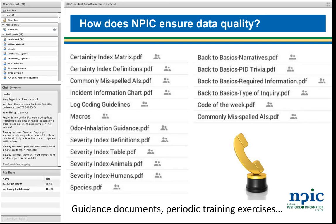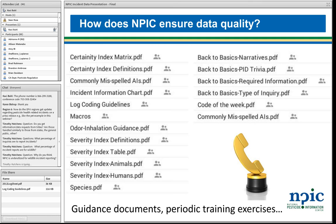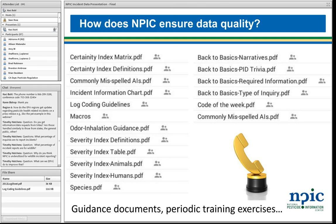These are some of the additional resources available to specialists to maintain data quality over time. We hold an internal contest every couple of months where there's a competition on coding quality, and the person who wins gets to keep a golden phone on their desk until the next contest is held. We have a list of commonly misspelled active ingredients — it's important to get those right so that data requests come out properly. We also have odor inhalation guidance: how do we categorize an inhalation exposure when the person reports an odor? We have procedures for just about every scenario we've come across.